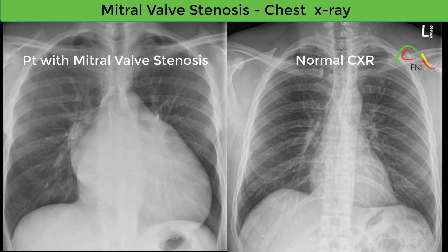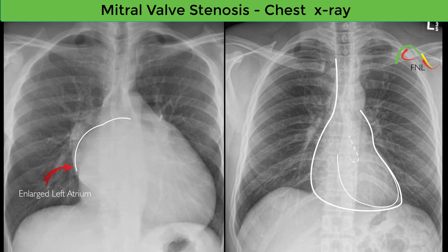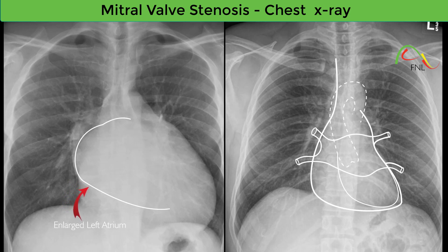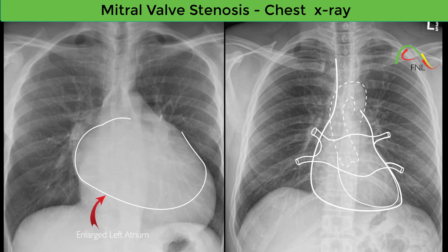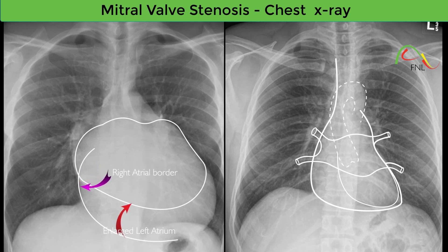The chest X-ray on the right is normal, and the X-ray on the left is an excellent teaching case. This patient has been diagnosed with mitral valve stenosis, and the X-ray on the left shows its classical features, particularly the enlargement of the left atrium. Mitral stenosis is defined as the narrowing of the mitral valve, which restricts blood flow from the left atrium to the left ventricle. This results in elevated left atrial pressure transmitted back to the pulmonary veins and eventually to the right side of the heart, gradually causing left atrial enlargement.